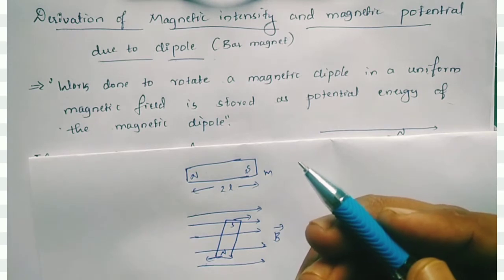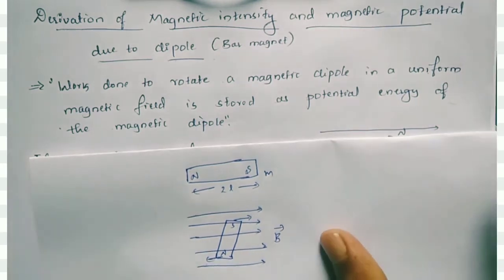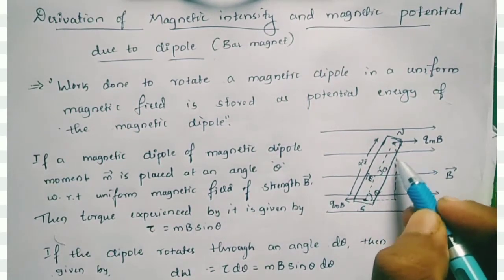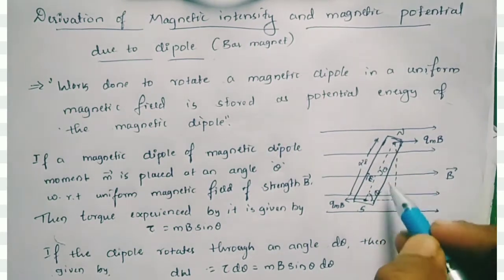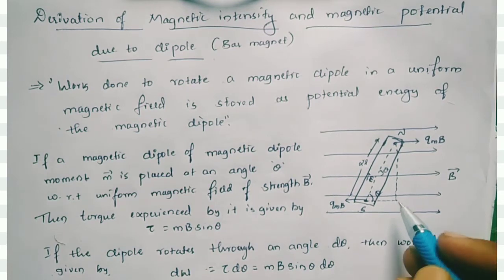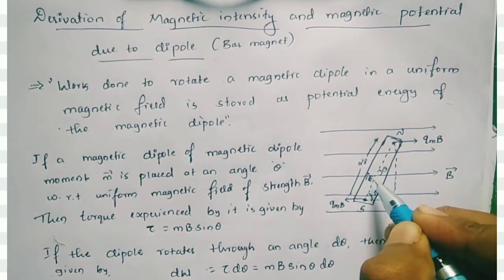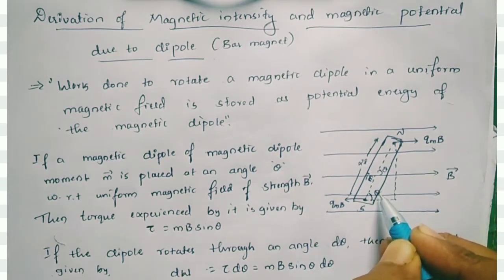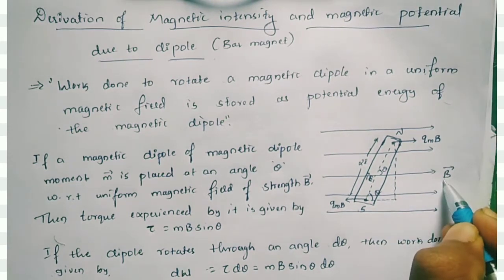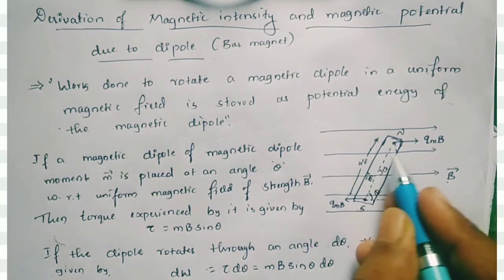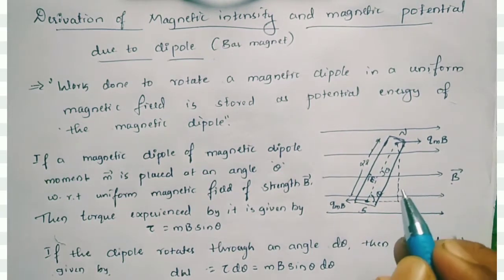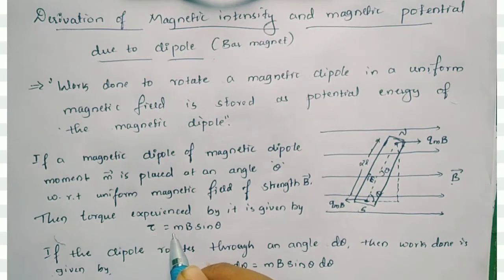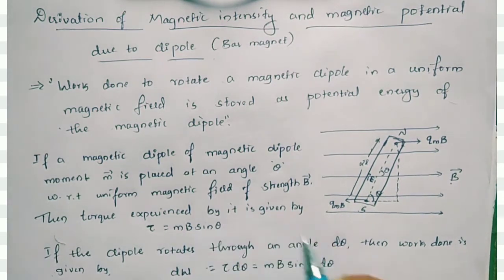Work done to rotate a magnetic dipole in a uniform magnetic field is stored as the potential energy of the magnetic dipole. Here we take a magnetic dipole inside a uniform magnetic field. The magnetic dipole moment is taken as M, the bar is kept at angle theta, and the magnetic field strength is B. It experiences a torque T equal to MB sinθ.